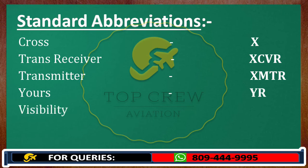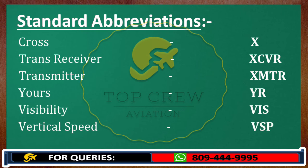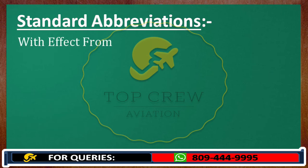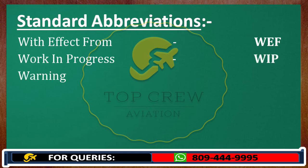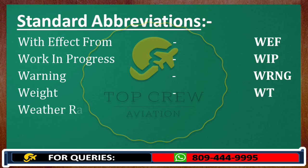Visibility: VIS. Vertical speed: VSP. With effect from: WEF. Work in progress: WIP. Warning: WRNG. Weight: WT. Weather radar: WXR.